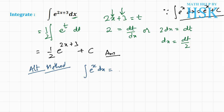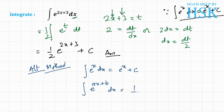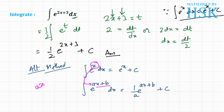Integration of e to the power of ax plus b is equal to 1 upon a times e to the power of ax plus b plus c. This means that if x is replaced by ax plus b — that is, we take x, multiply it by any number a, and add a constant b —